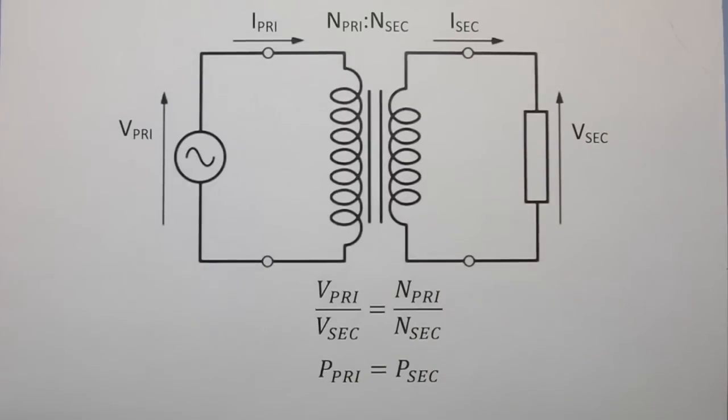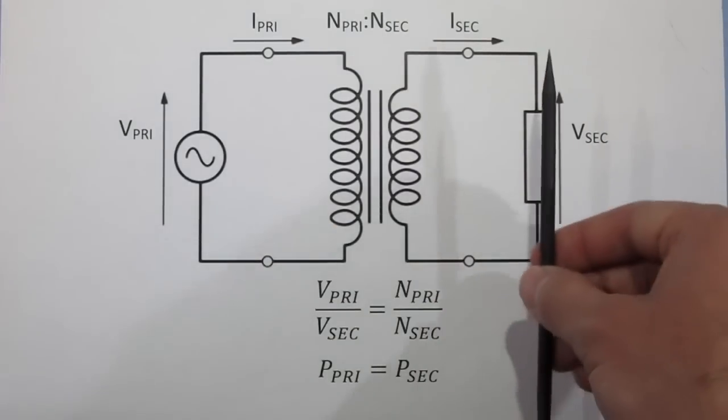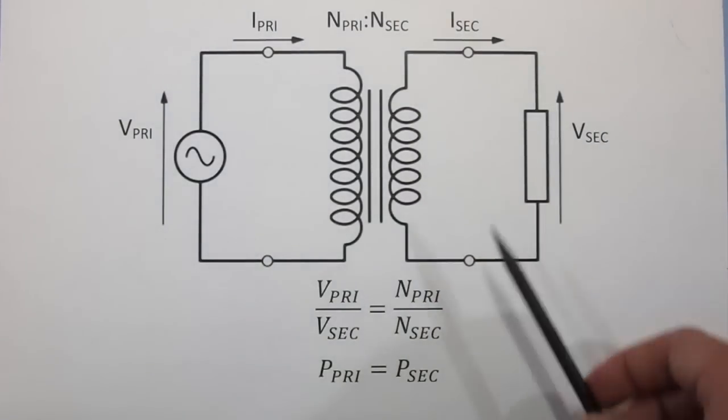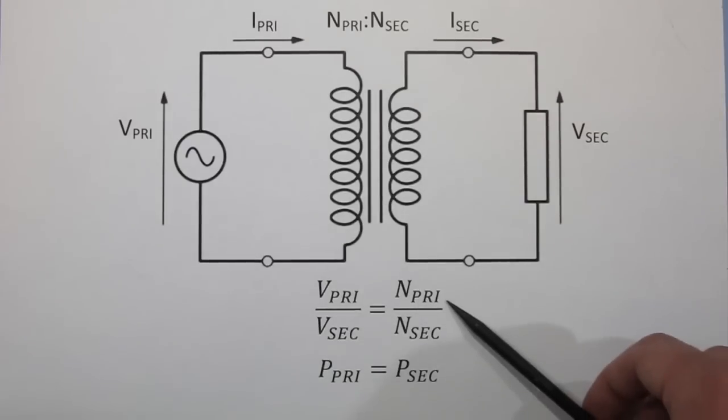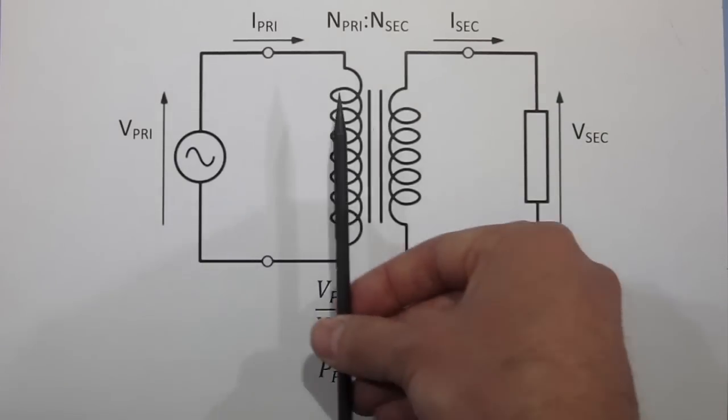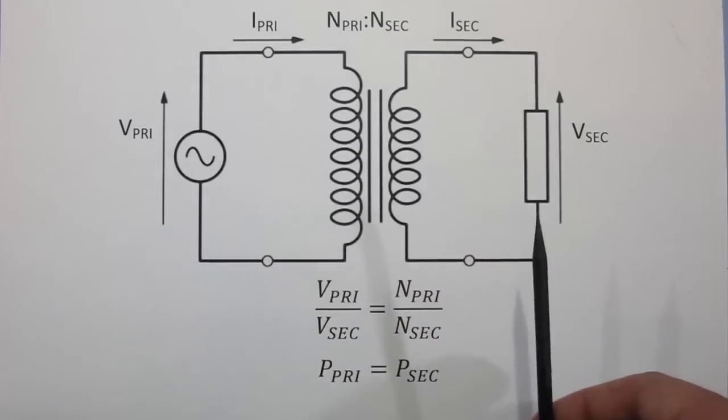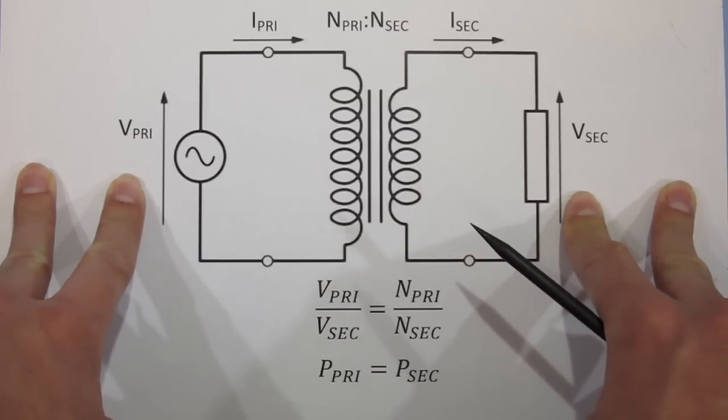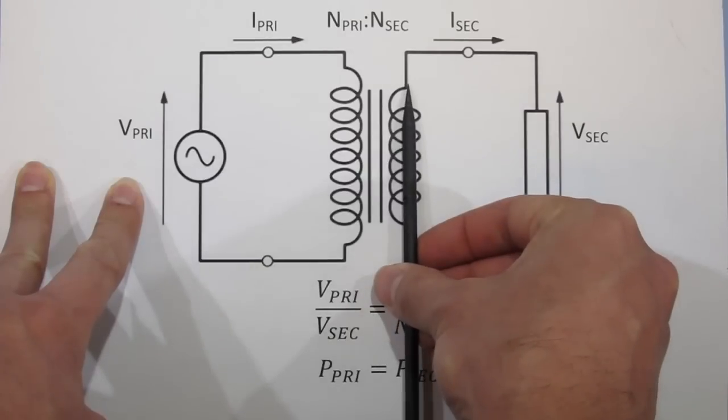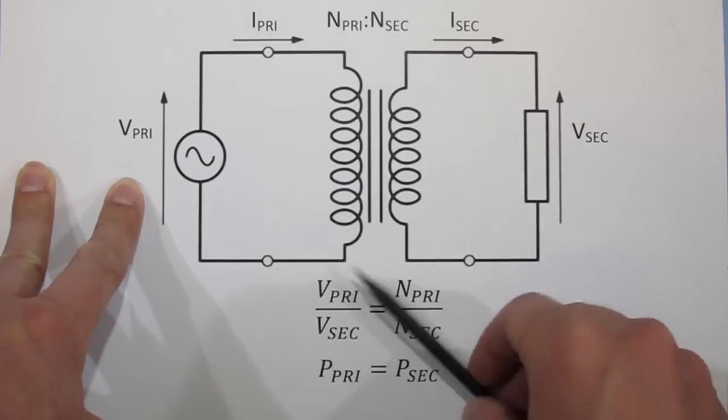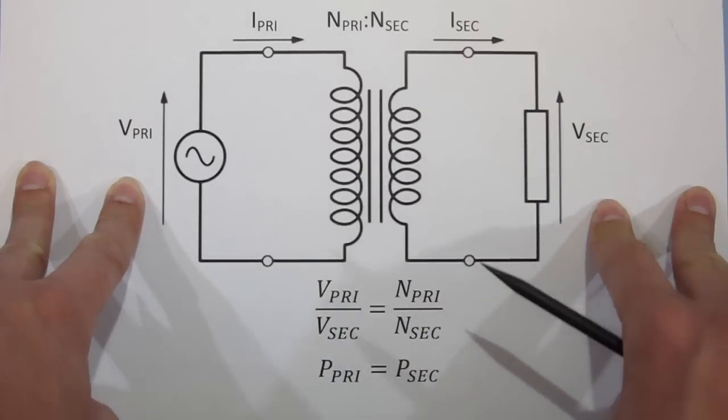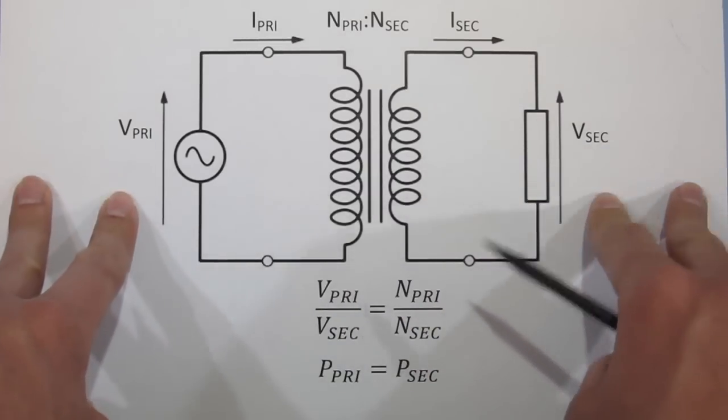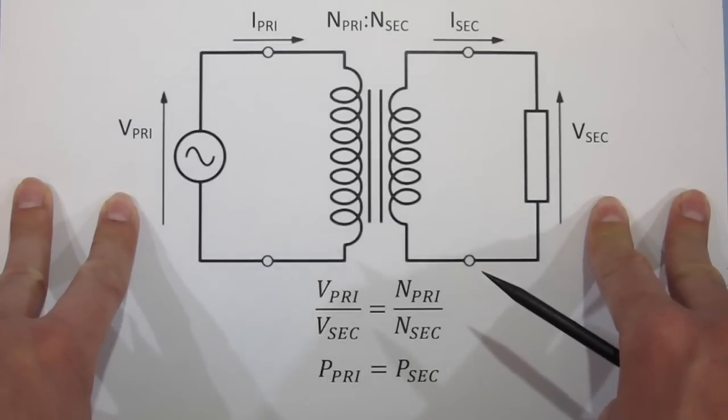The relationship between the voltage induced between the two windings is described by this equation here. If we have a one-to-one number of windings on each side, a 230 volt waveform here would produce the same 230 volt waveform on the secondary. If we had half as many windings on the secondary side, we'd see 115 volts AC instead.